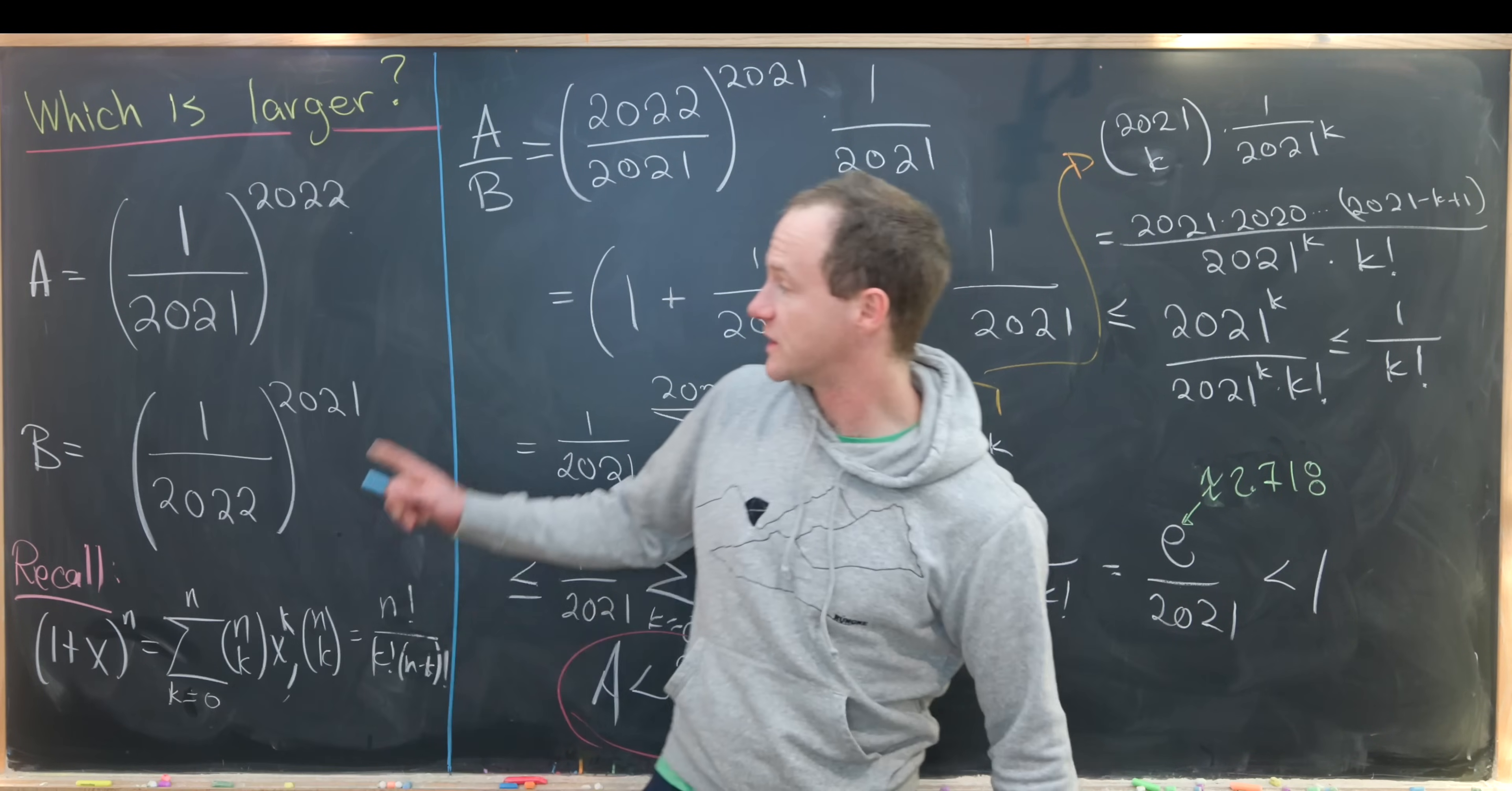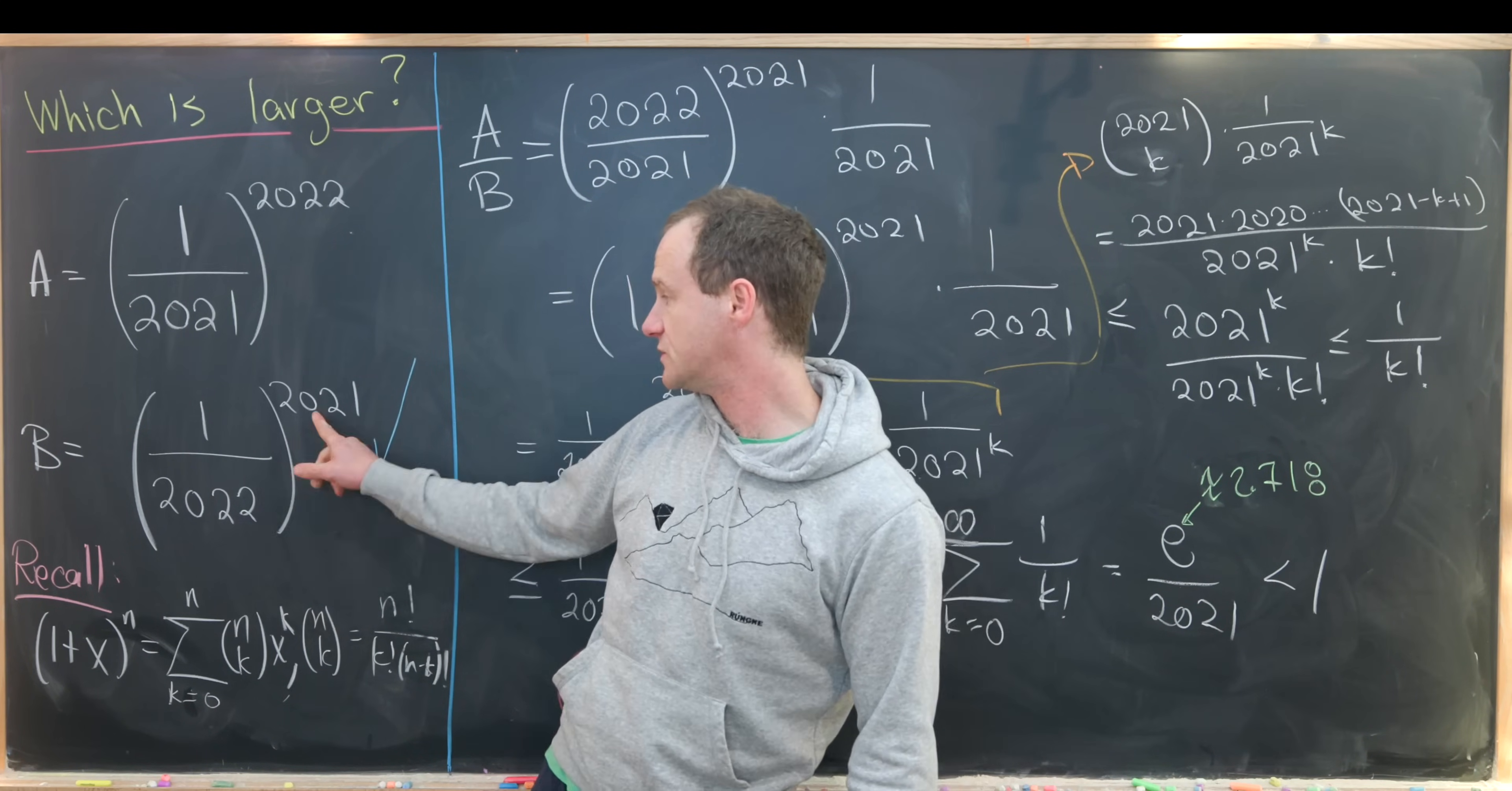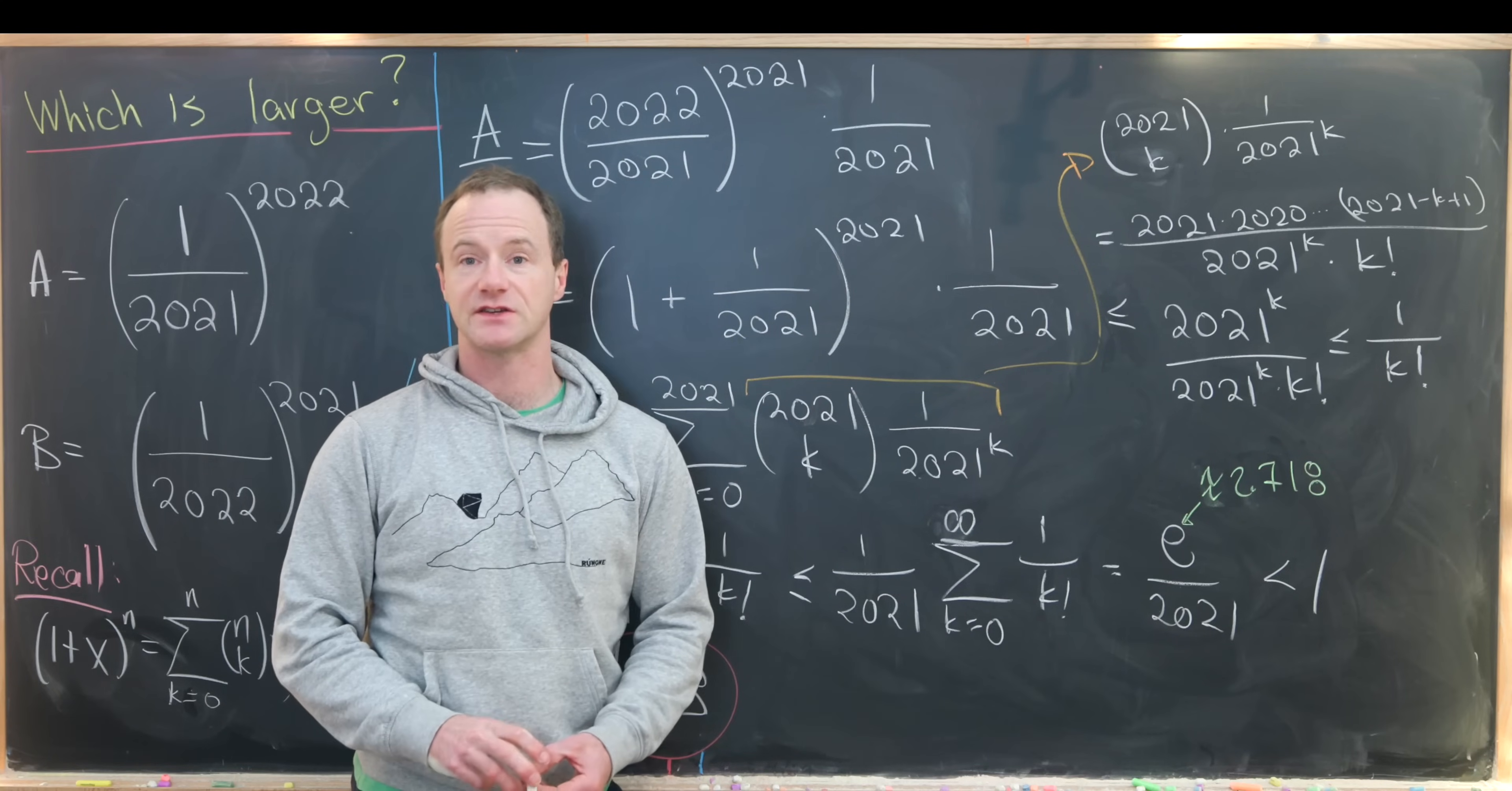But if that's less than 1, that means a is less than b. Now going over to our definition of a and b, we see that b is larger. So 1 over 2022 to the 2021 is larger than 1 over 2021 to the 2022. And that's a good place to stop.